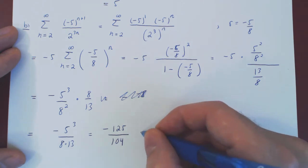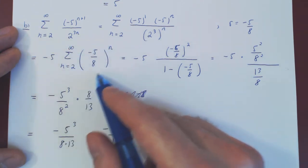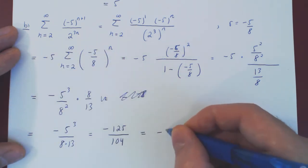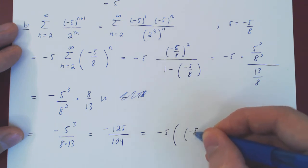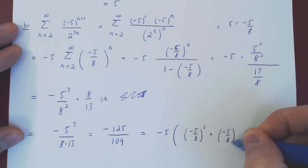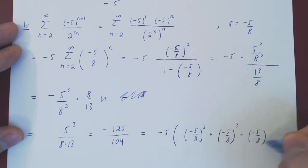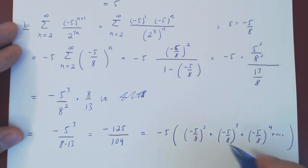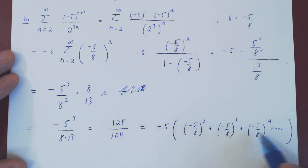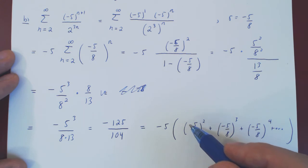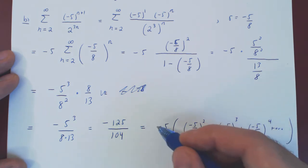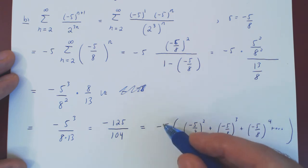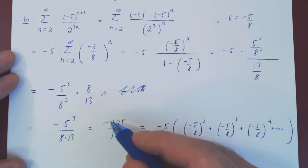Far from obvious. If you want to make it more concrete, expand the first few terms: negative 5 times negative 5 over 8 squared, plus negative 5 over 8 cubed, plus negative 5 over 8 to the 4, and so forth. If you keep adding consecutive powers of negative 5 over 8 forever and multiply by negative 5, the exact result is negative 125 over 104.